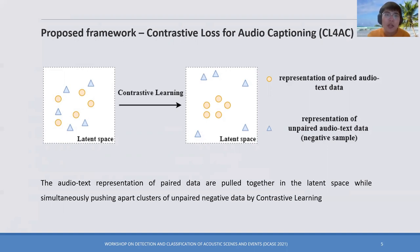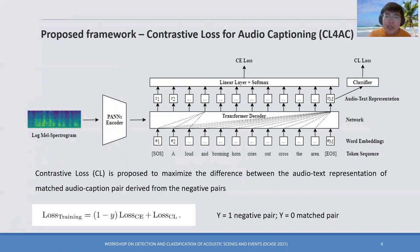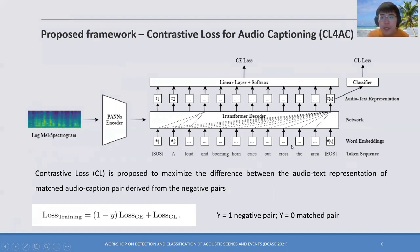Our main idea is to use contrastive learning to pull the audio-text representations of paired data together, while simultaneously pushing apart the clusters of unpaired, negative, unmatched data. The contrastive learning objective is designed to maximize the difference between the representations of matched and negative audio-caption pairs. We use the last vector of the audio-text representation in the transformer decoder, because it can attend to all previously generated tokens and is also filled with audio information.